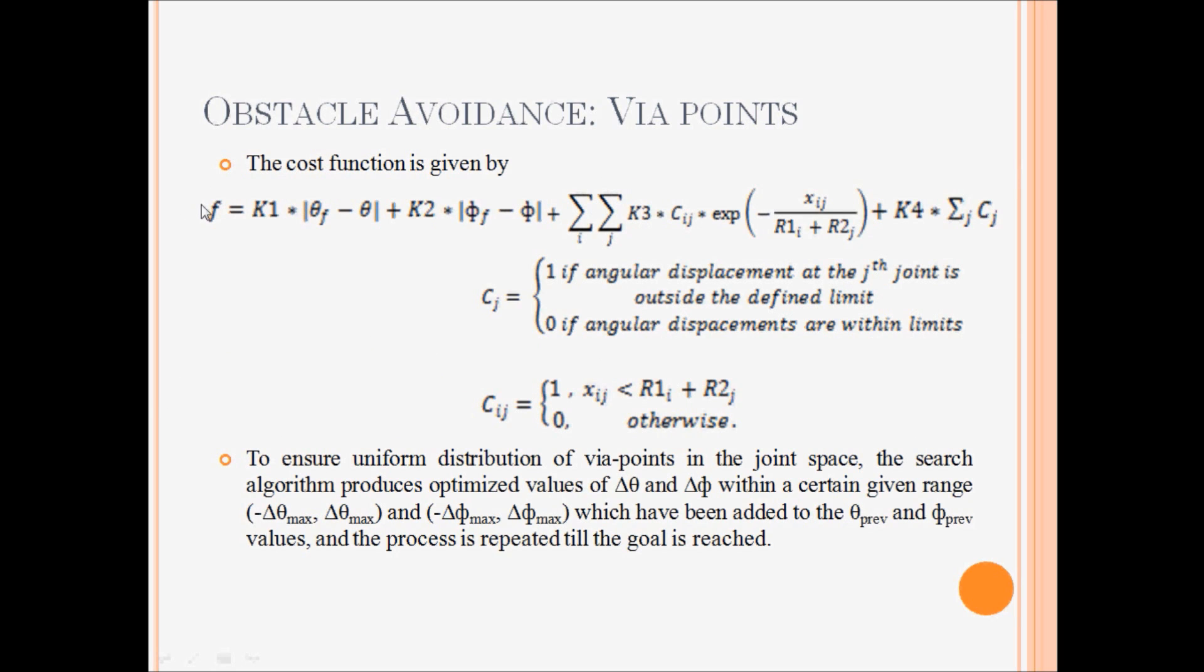So this is the cost function designed by us. We have four terms here. The first two terms actually make the arm go to the final orientation, which is given by theta f and phi f. So by minimizing these two terms, we make the current angle theta 1 to theta f and phi 1 to phi f. These two are penalties. The fourth term gives a penalty when useless solutions are proposed by the optimizer and angles are out of bounds.